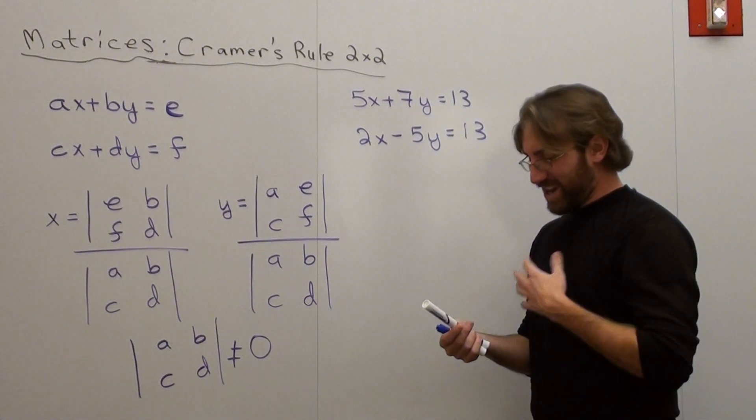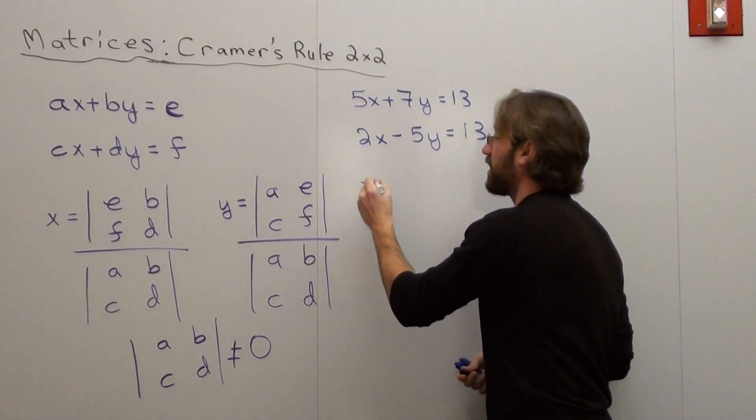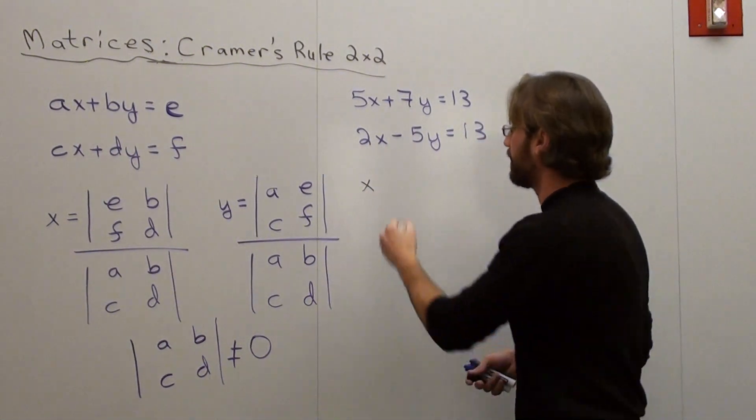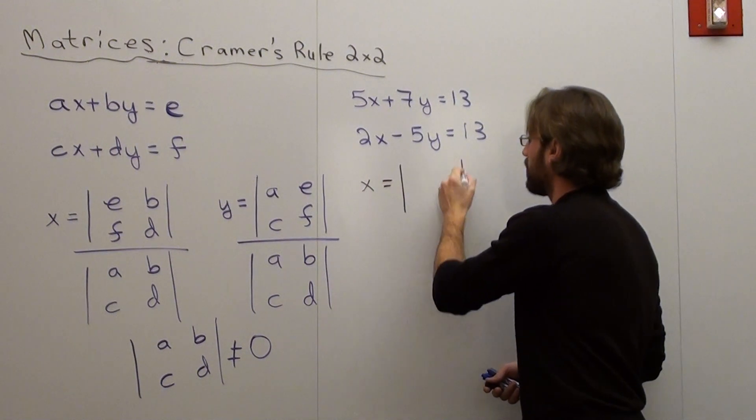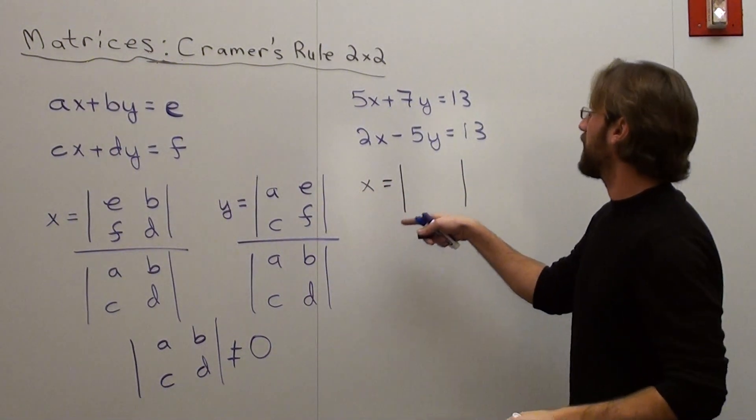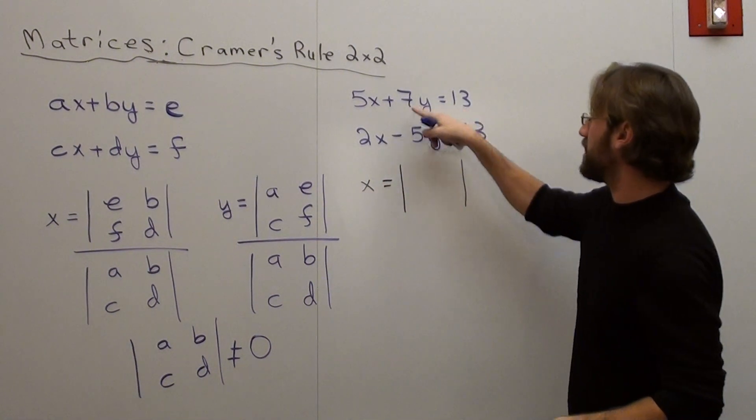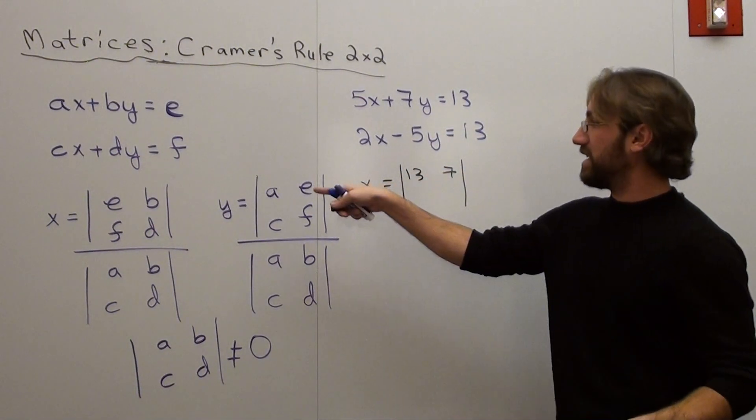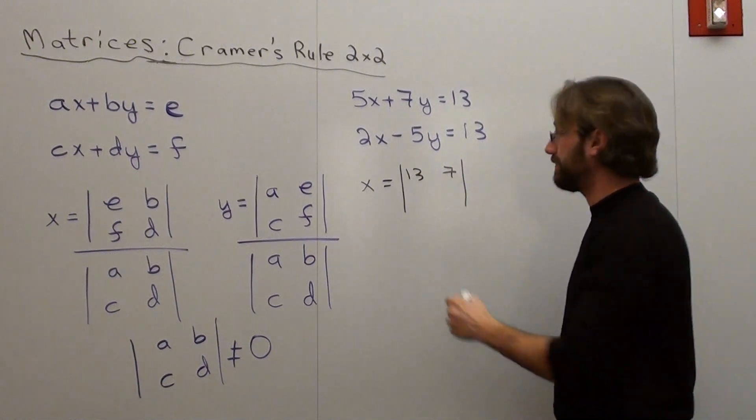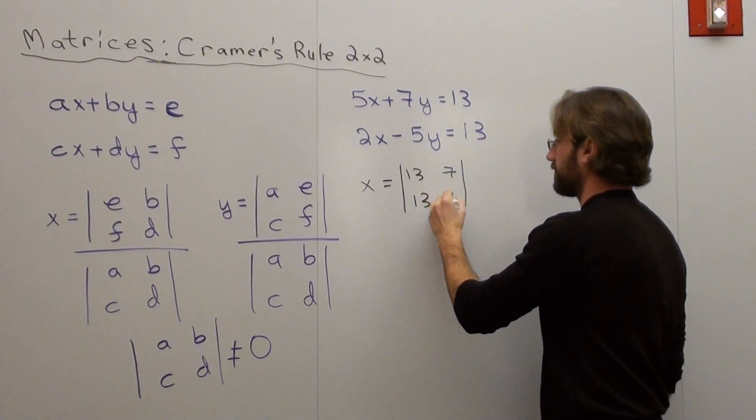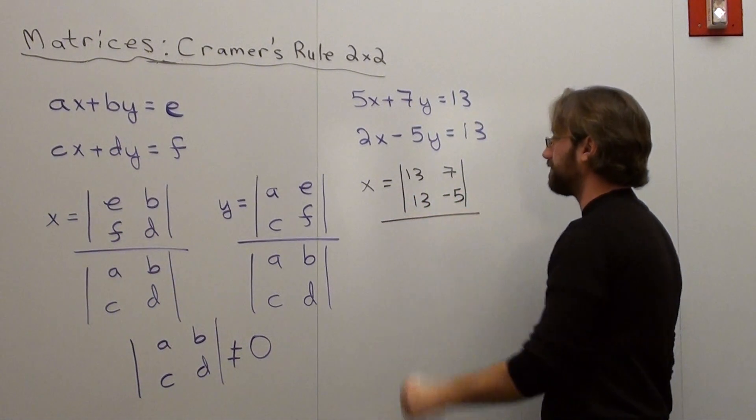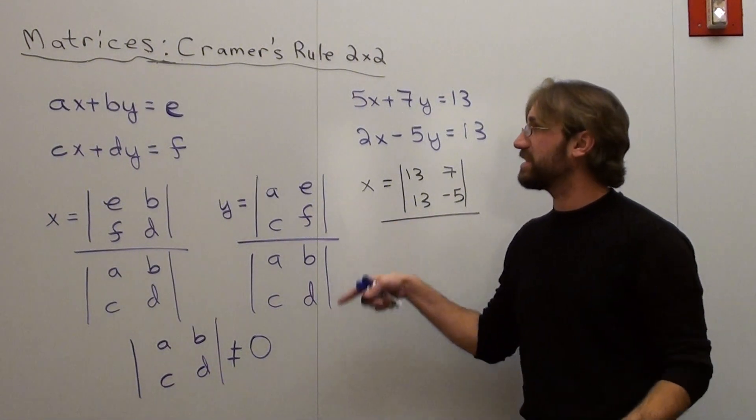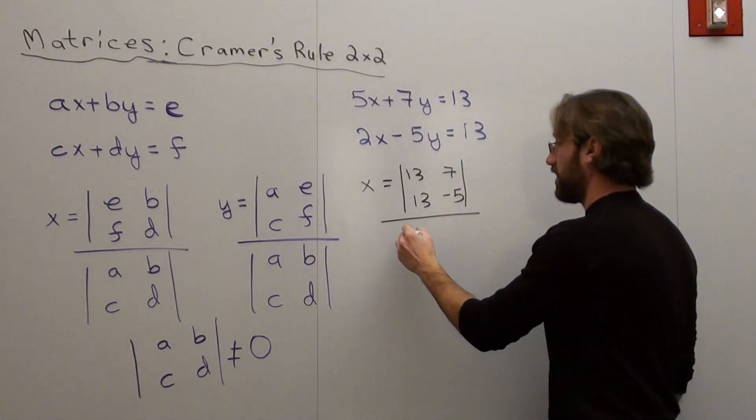so we're going to figure out the determinant of the first one. So that's the determinant of e, b, f, d. So basically that's 13, 7, and then f and d is 13 and negative 5. And that's going to be over a, b, c, d, which is 5, 7, 2, negative 5.